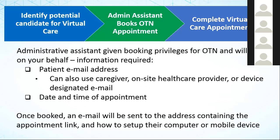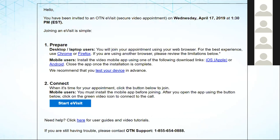Once you've identified the right candidate, liaise with your administrative assistant to book the appointment. All you really need is the patient's email address — alternatively a caregiver's email or a device-designated email address — along with the time and date of the appointment. Once booked, an information email is sent to the specified address, providing instructions on how to set up their desktop or laptop, what app to install if using a smartphone or tablet, a link to test their device, and an OTN support line if they encounter any problems.